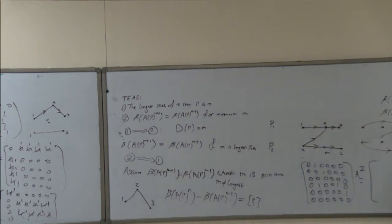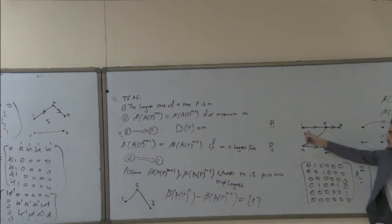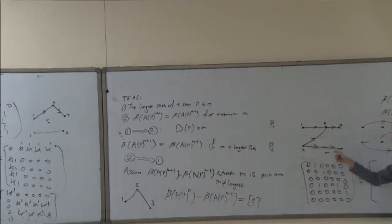For directed acyclic graphs, you eventually get the zero matrix. So once you reach the zero matrix at power three, you know the longest path is three minus one equals two. The maximum number of dependent tasks you can assign to one processor in this case is two, and you can now evaluate how fast or slow the computation can be for that processor.